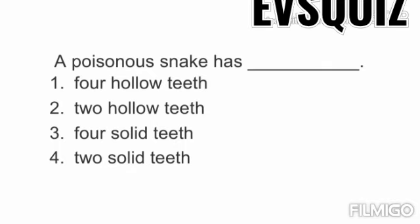Second question: 'A poisonous snake has ___.' Option one: four hollow teeth. Option two: two hollow teeth. Option three: four solid teeth. Option four: two solid teeth. Start thinking students. You have already seen videos and we discussed about poisonous snakes in the snake charmer story. See the options — what will be the answer?